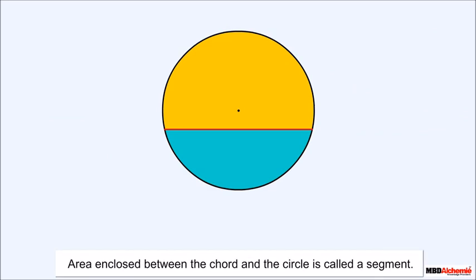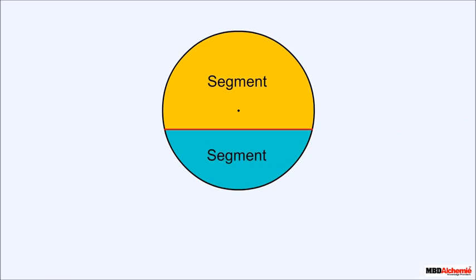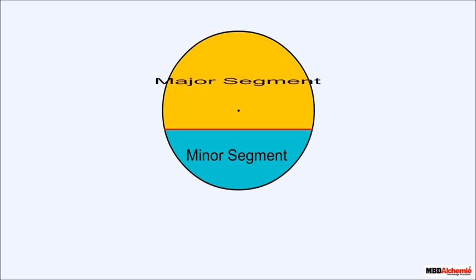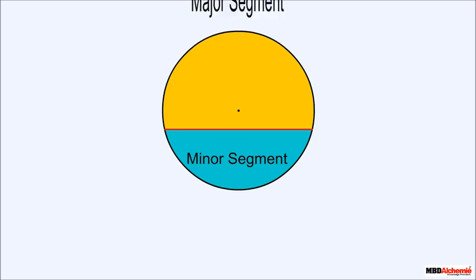The chord divides the interior of the circle into two parts. The area enclosed between the chord and the circle is called a segment. One part is smaller and the other is bigger in size — the smaller one is called a minor segment and the bigger one is called a major segment.